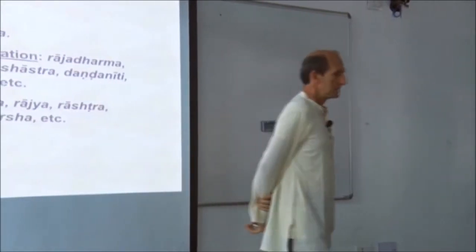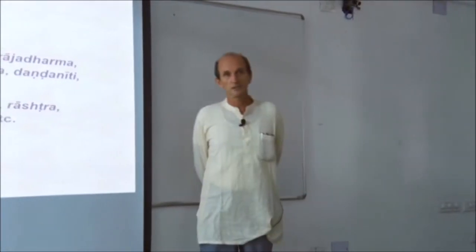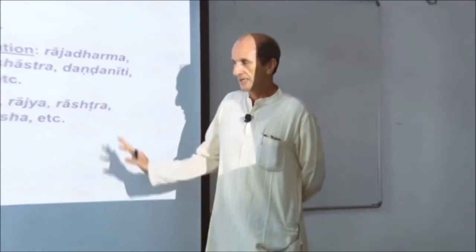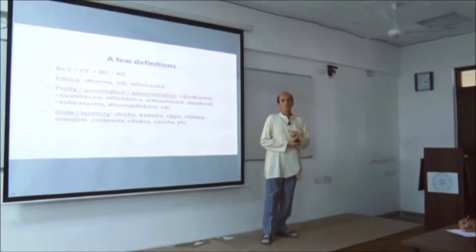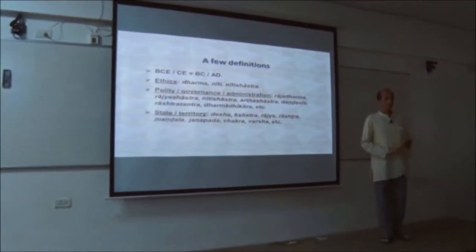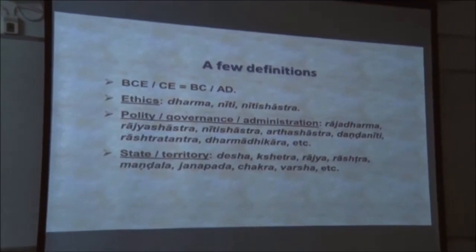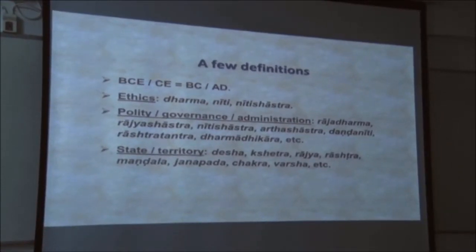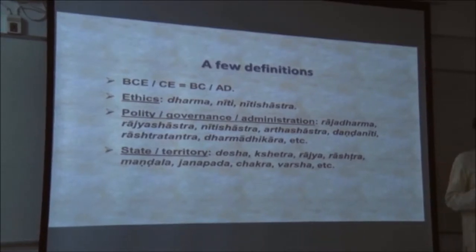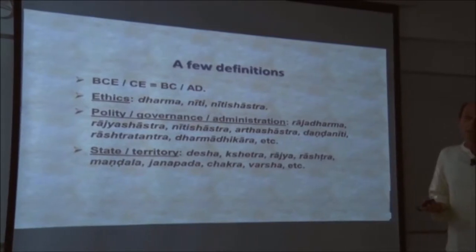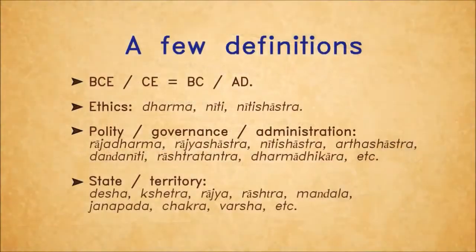I've been referring to state. A state — we will see later what definition we have in ancient India, because the modern definition according to modern political science is something completely different. It is equally valid to look at these concepts on their own strength, in their own context, without reference to the modern context. State or territory — the two go together, you can't have a state without territory. Desha, Kshetra, Rajya, Rashtra, Mandala, Janapada — Janapada is very important and we'll return to that — Chakra, and Varsha, and so on. There is a very rich vocabulary.